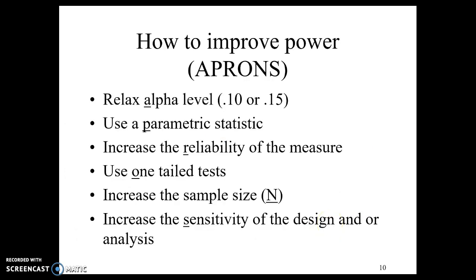If we need to improve power, one way to do that is to relax your alpha, meaning instead of being 99% confident, maybe we're 95%, or 90%, or 85%. You can use a parametric statistic, meaning a stronger statistic. Means tend to be good, but if you're using a proportion or total score, you might be able to do something different. You can increase the reliability of the measure. The more reliable a measure is, the less variance there is between your scores. You can also use a one-tailed test. We're putting all 5% error on one tail instead of splitting that 5% on both sides. Increasing sample size is the absolute 100% easiest way to improve your power. You can also increase the sensitivity of the design or analysis, but that's sometimes really hard.